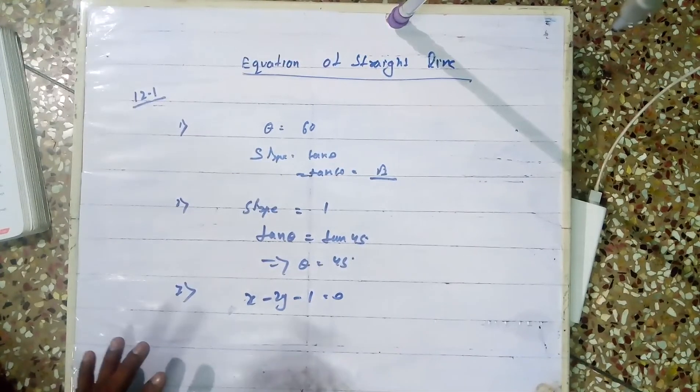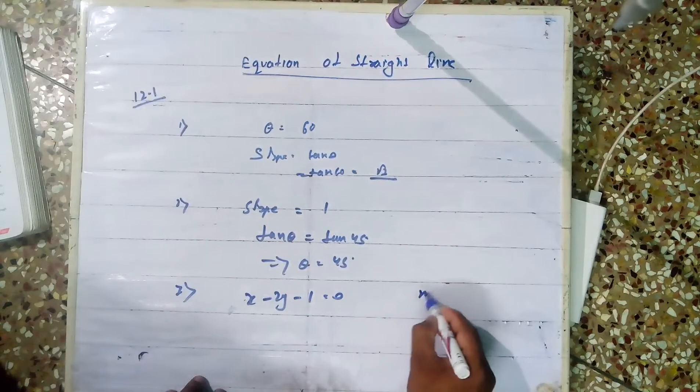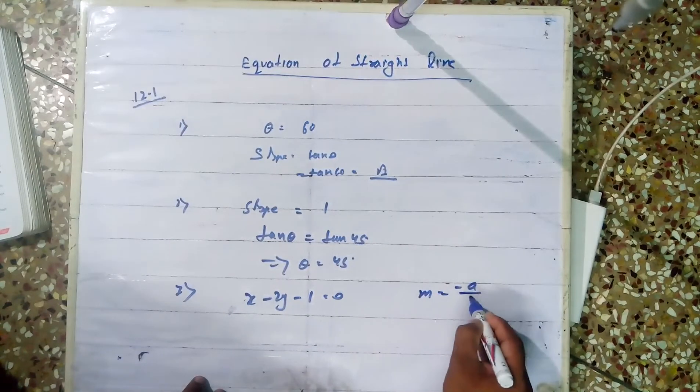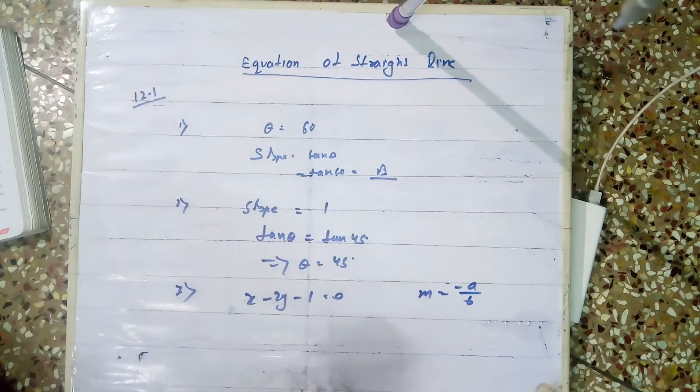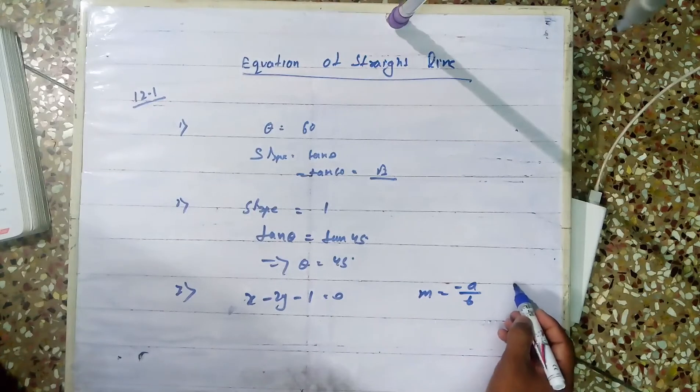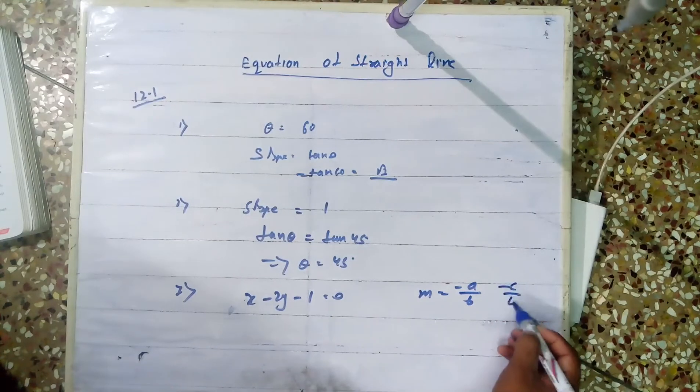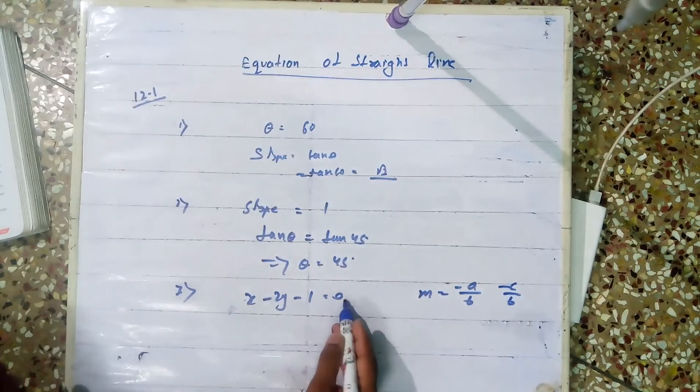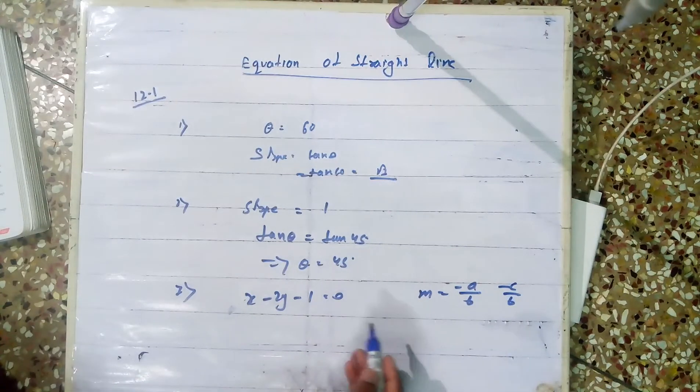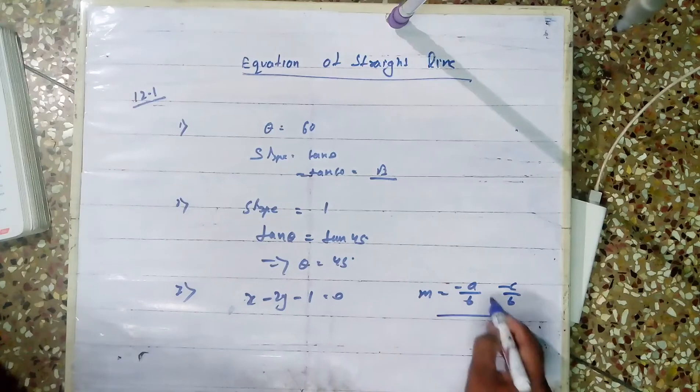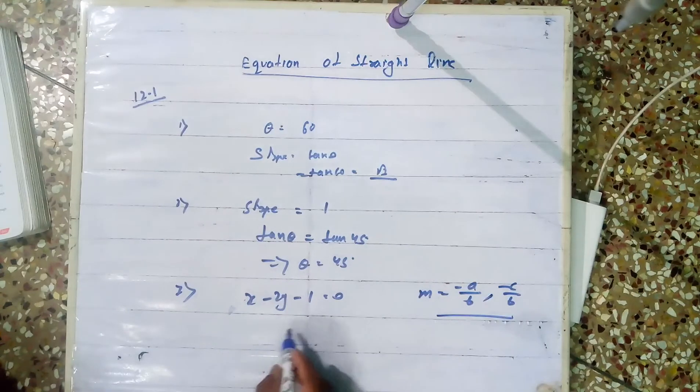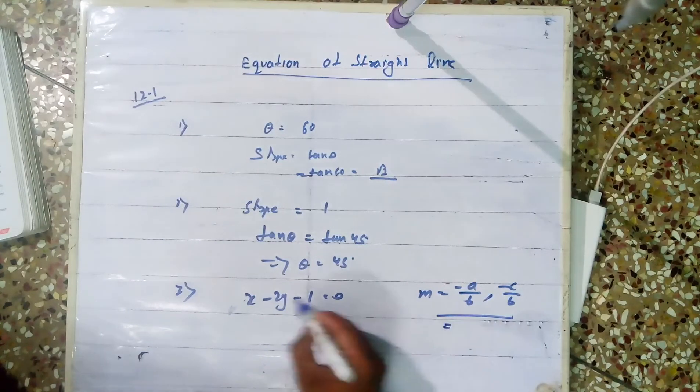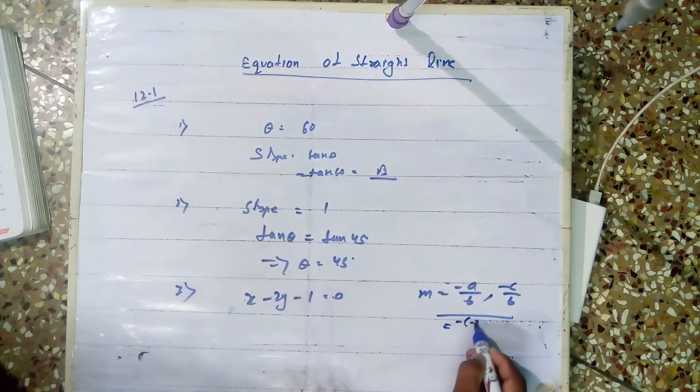The shortcut formula, if you remember: slope equals minus a by b, y-intercept equals minus c by b. All terms should be on one side equal to 0 according to this formula. Now, the slope m will be how much?